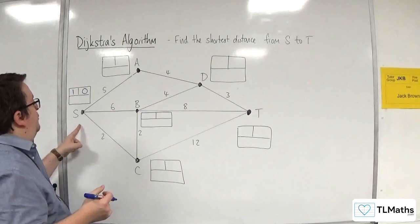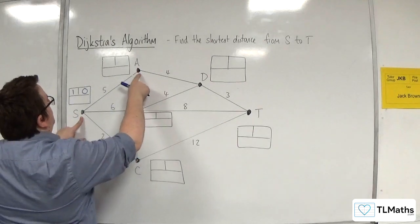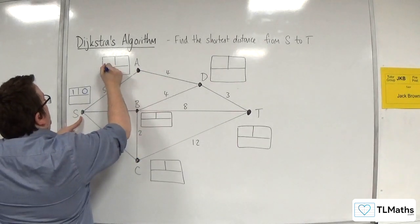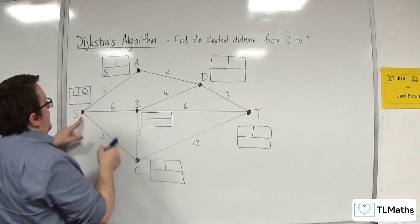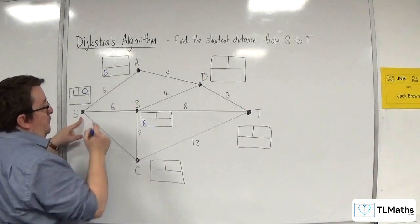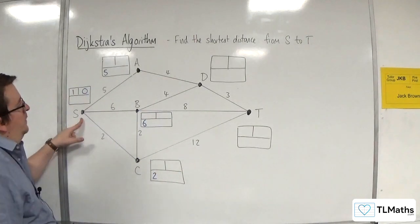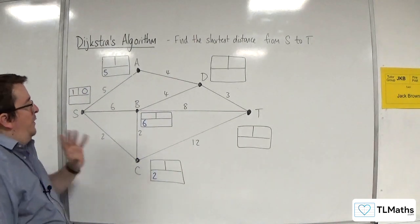Now, from S, we look at all of the routes out of S. And we see that it would take five to get to A, so five goes into the working values box for A. Six to get to B, so six goes into the working values box for B. And then two for C.